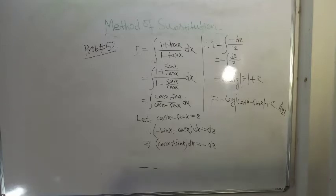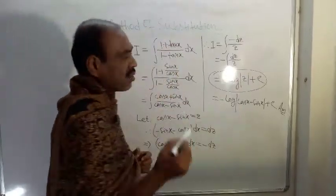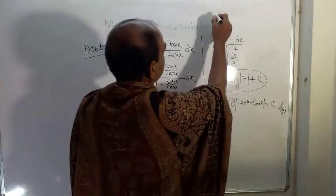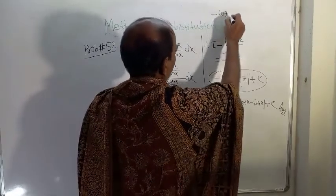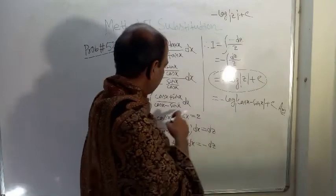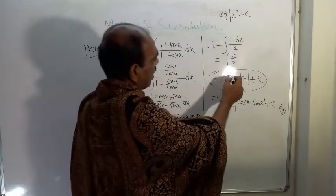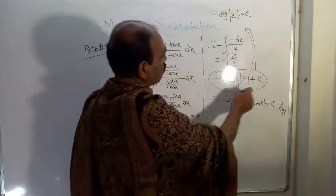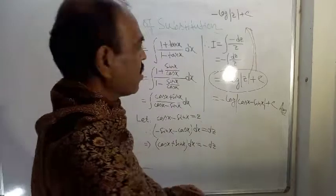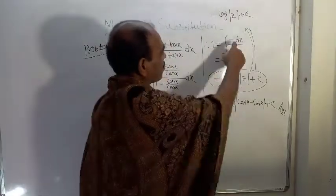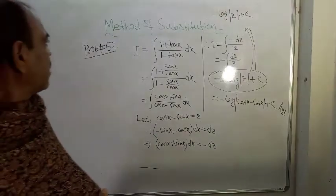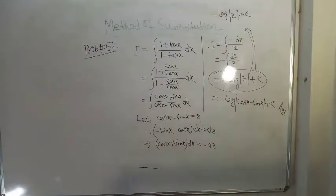This line is not clearly visible due to extra light, so I am rewriting it here: the result is -log|z| + c, and z is nothing but cos x - sin x. So the final answer is -log|cos x - sin x| + c. Thank you. Next I will move to problem number 53 in the next video.